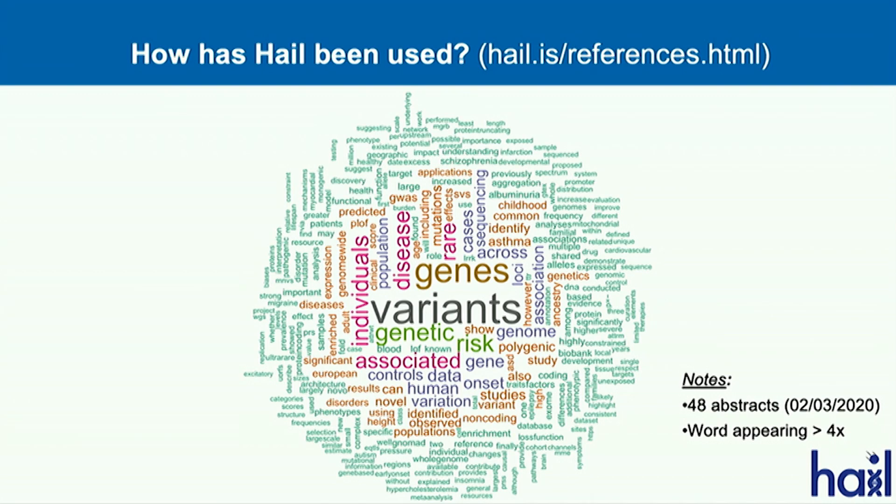The major themes cited were variations, genetics, and genes — which makes sense since Hail was developed at the Broad Institute and our main user base are geneticists. These are words appearing more than four times in those abstracts, which differs from your immediate word-association responses.